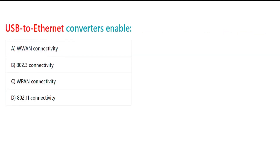USB-to-Ethernet converters enable: A. WWAN connectivity. B. 802.3 connectivity. C. WPAN connectivity. D. 802.11 connectivity.